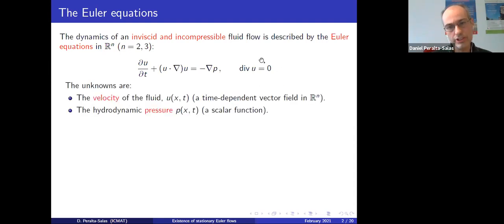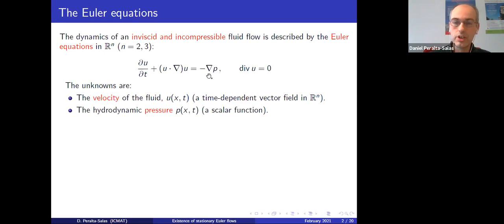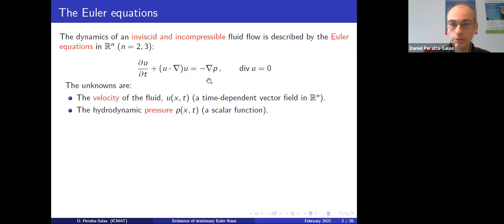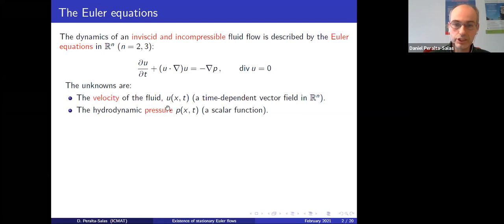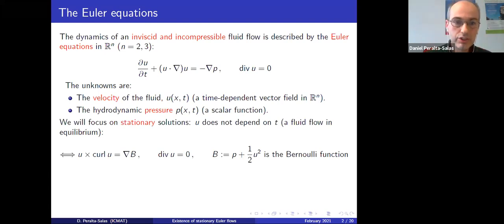The second equation is just the incompressibility condition: divergence of u equals zero. The first equation is essentially Newton's law — the force given by the gradient of the pressure equals the acceleration of the fluid particle. The unknowns of this system are the velocity field u, which depends on space and time as a time-dependent vector field in R^n, and the hydrodynamic pressure, which is a scalar function.